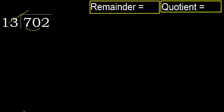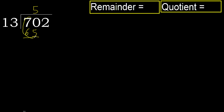13 multiplied by 6 is greater, multiply by 5. 65 is not greater, okay subtract. 70 minus 65 is 5, next.